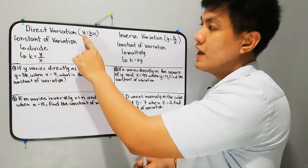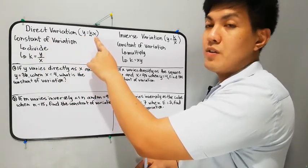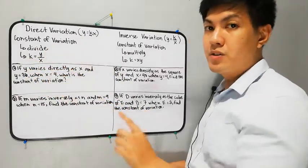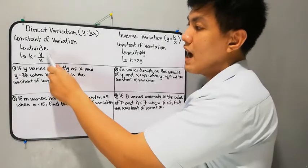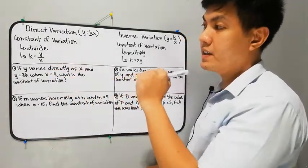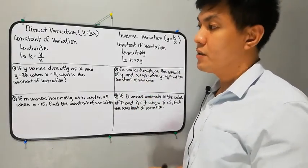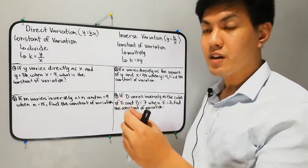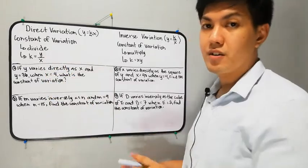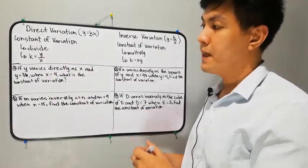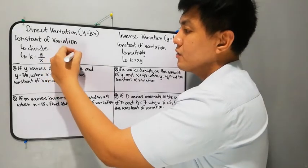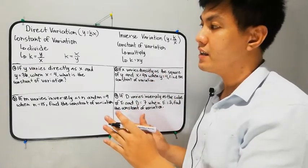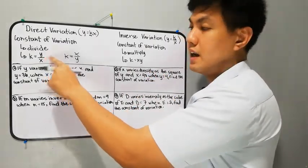If we have y is equal to kx, the formula for the constant of variation is k is equal to y over x. Take note: it's not always y over x. Sometimes k is equal to x over y. Later on, I'm going to explain when to use y over x and when to use x over y.